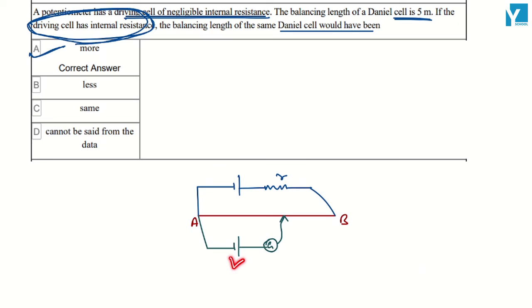Because the voltage is fixed here and the net voltage is less, the balancing length will actually be higher so that the voltage is equal here.